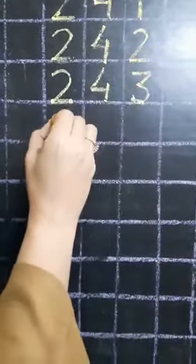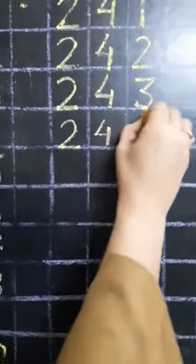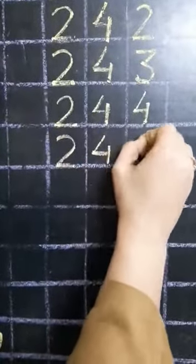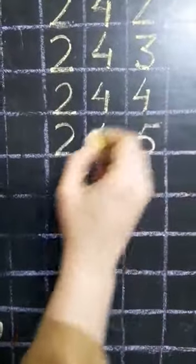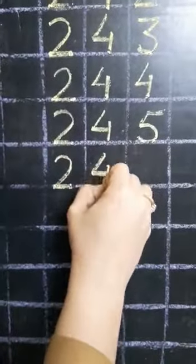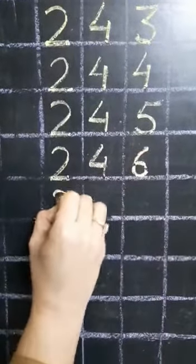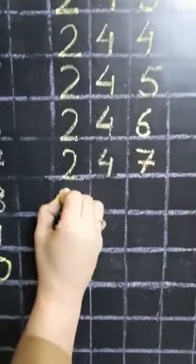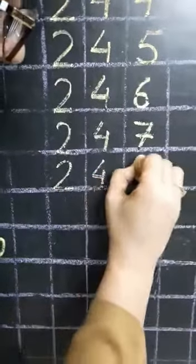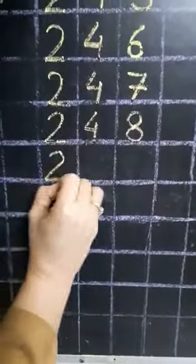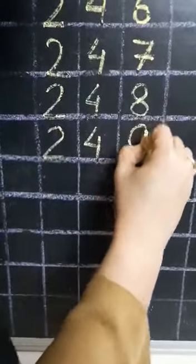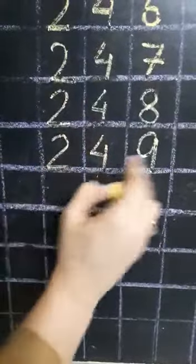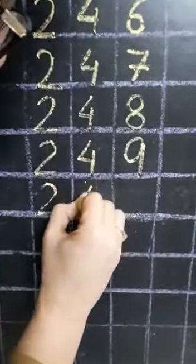244. Yes. Then comes 245. Then comes 246. Then comes 247. Then comes 248. Yes. And then comes 249. Now 9 has come. After 49 comes, yes, 50. And 249 ke neeche kya aayega? It will be 250.